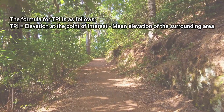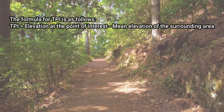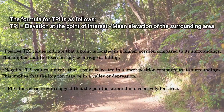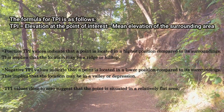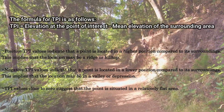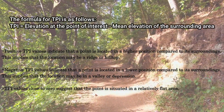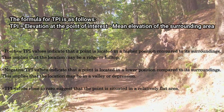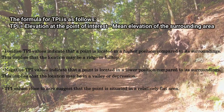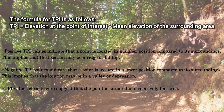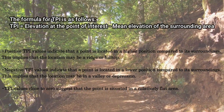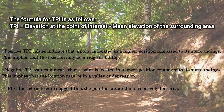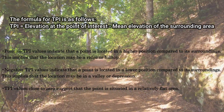The formula for TPI is: elevation at the point of interest minus mean elevation of the surrounding area. Positive TPI values indicate that a point is located in a higher position compared to its surroundings, implying the location may be a ridge or hilltop. Negative TPI values indicate a lower position, implying the location may be in a valley or depression. TPI values close to 0 suggest the point is situated in a relatively flat area.